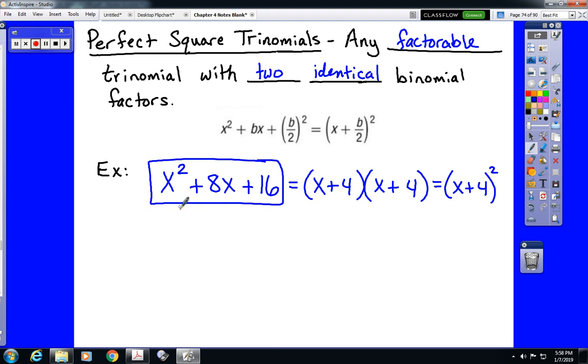Now it's worth noting this notation up here should make sense if we look at this example that we just had. B is 8. So half of b would be 4, x plus b over 2 quantity squared. That would be x plus 4 quantity squared. That's what we have over here.